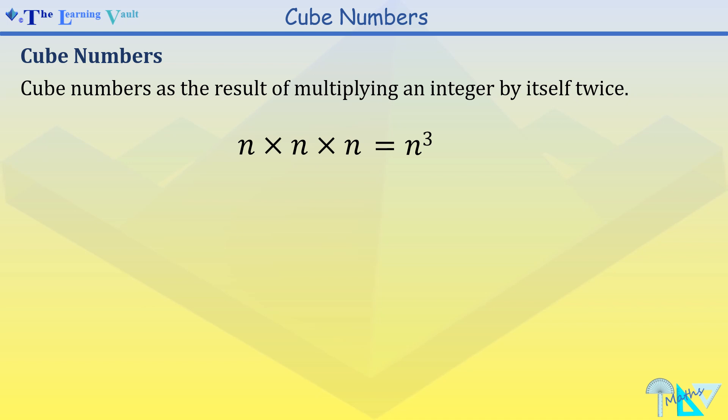By representing this using numbers, we have 2 times 2 times 2 which is 2 cubed, which equals 8.